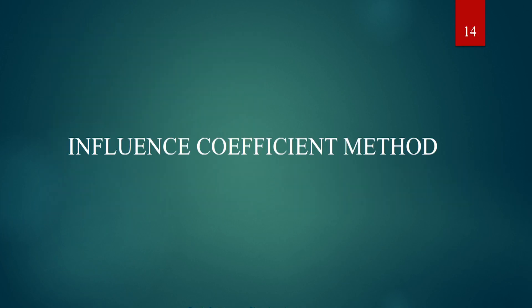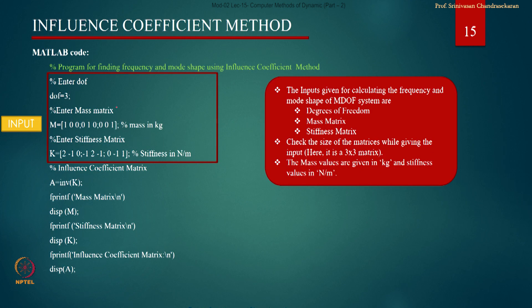The third program is the influence coefficient method program. We also did a problem of the same kind in the last lecture using the influence coefficient method, but we derived the influence coefficient matrix directly. The mass matrix and stiffness matrix are again given as input — this is standard for all programs. It inverts the stiffness matrix and gets the influence coefficient matrix; one can also directly obtain it, as we did in the last lecture.